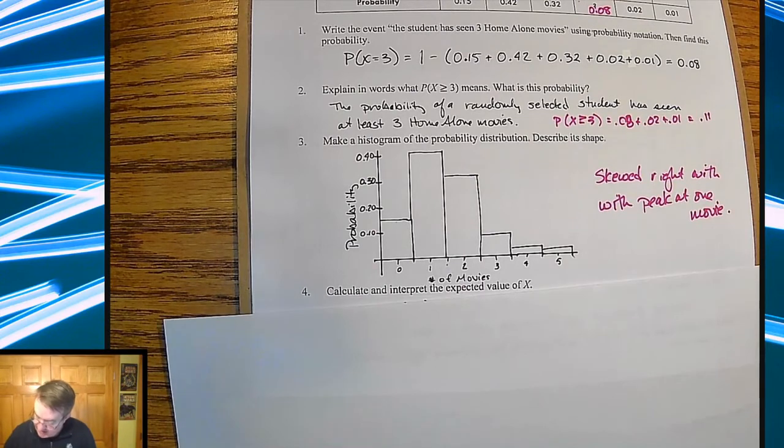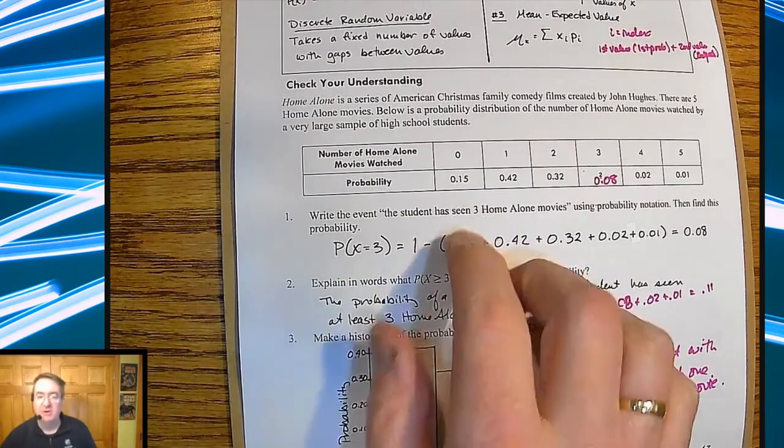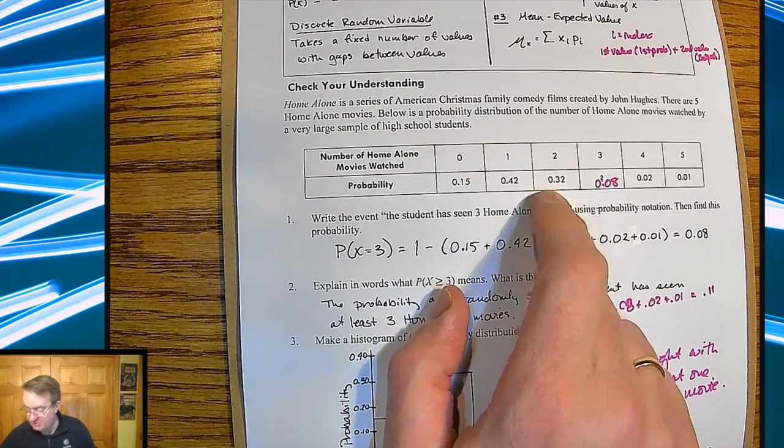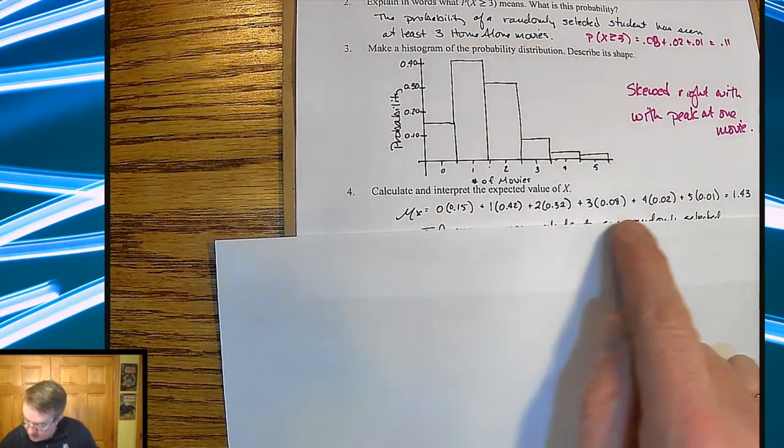Calculate the expected value of X. So remember, this is what you're going to go through and do. We're going to take each of these values times the probabilities. So if we go back up here, zero times 15%, one times 42%, two times 32%, et cetera, and add them all up. So if we went through and did that...